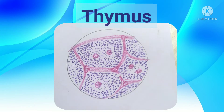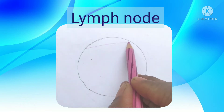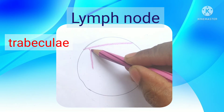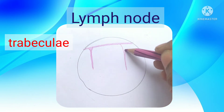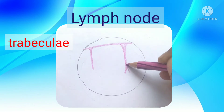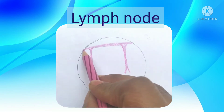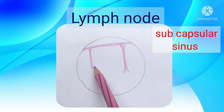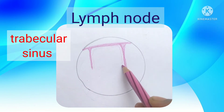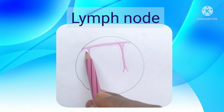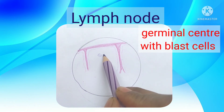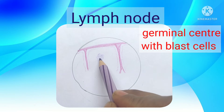Now the lymph nodes - they are small bean-shaped encapsulated lymphatic organs. The size may vary from one millimeter to centimeters. They serve as a filter for the lymph coming from the afferent lymphatic vessels. They are covered by a capsule which sends septa called trabeculae. Beneath the capsule, we have small sinuses called subcapsular sinuses, and just beneath the trabeculae they are called trabecular sinuses.